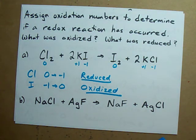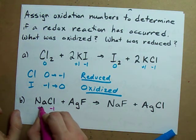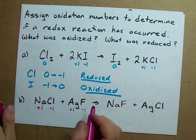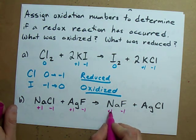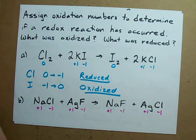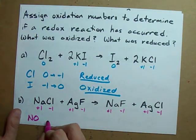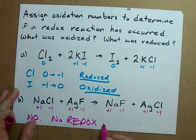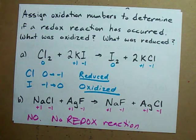Let's assign oxidation numbers here. No elements, no hydrogen, no oxygen — just see what charges these atoms want. Chlorine usually wants minus one, sodium wants plus one. Fluorine wants minus one, silver can have plus one. Fluorine wants minus one, chlorine wants minus one, silver is okay with plus one. Did any oxidation numbers change? No — none changed. No redox reaction happened here. Nothing was oxidized, nothing was reduced. This is just a regular double displacement reaction — shouldn't be surprising.